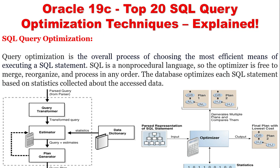SQL query optimization is the overall process of choosing the most efficient means of executing a SQL statement. SQL is a non-procedural language, so the optimizer is free to merge, reorganize, and process in any order. The database optimizes each SQL statement based on statistics collected about the accessed data.